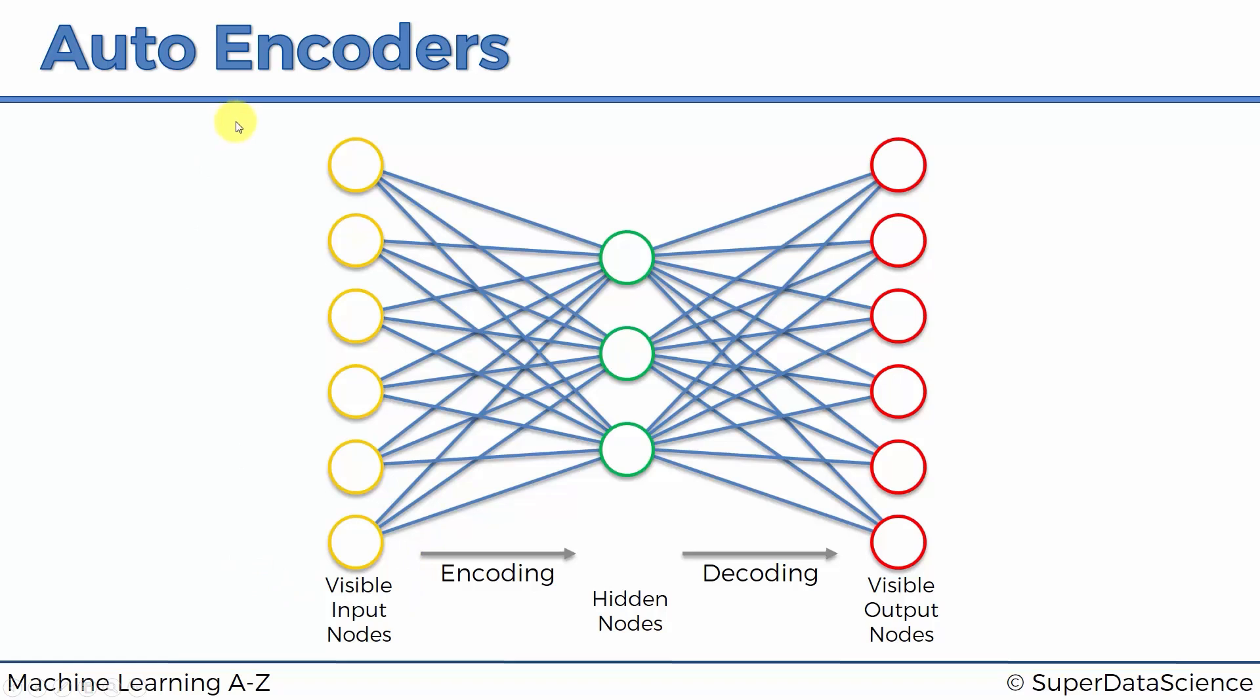And from that you can tell that autoencoders are not a pure type of unsupervised deep learning algorithm. They are actually a self-supervised deep learning algorithm because they are comparing to something on the end. Remember in Boltzmann machines we didn't even have outputs. We didn't have to compare to any kind of labels or anything.